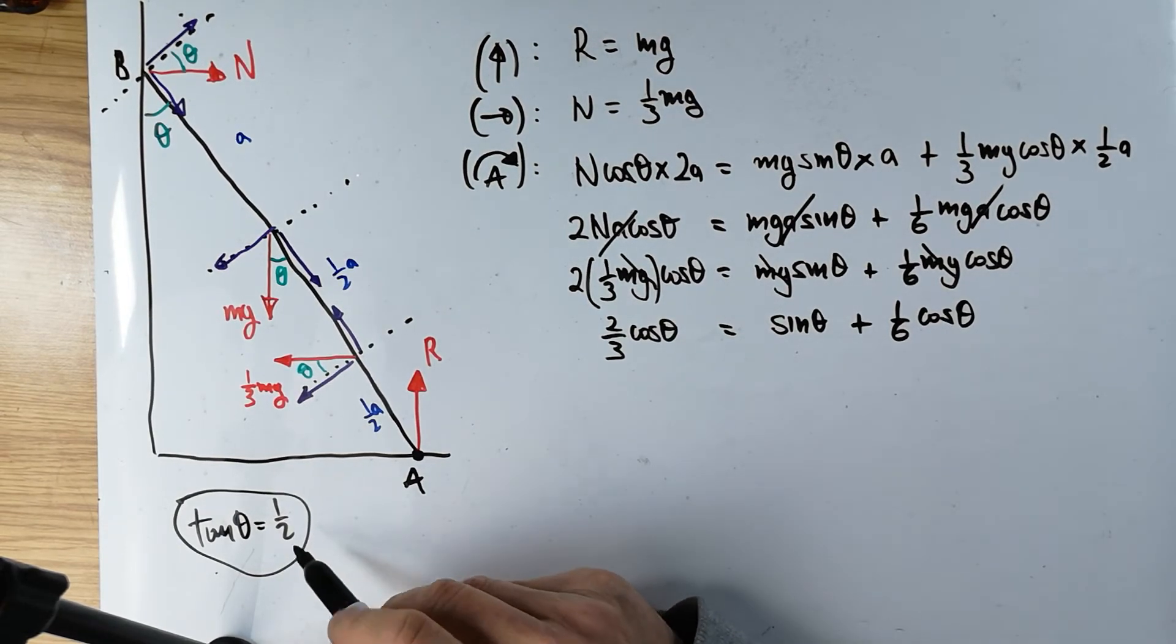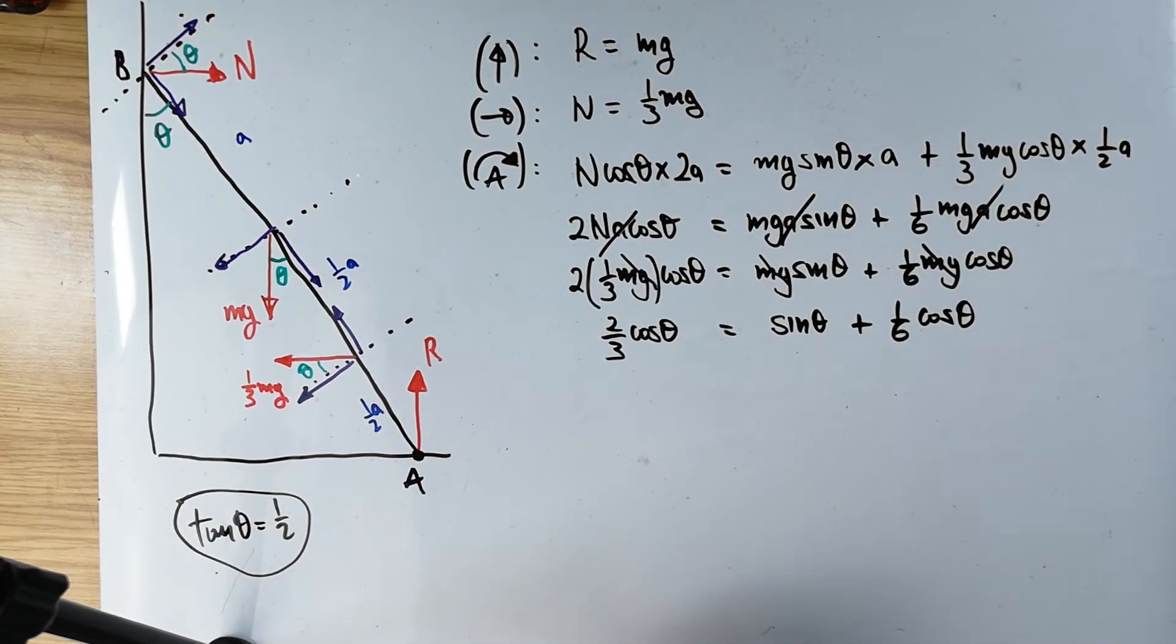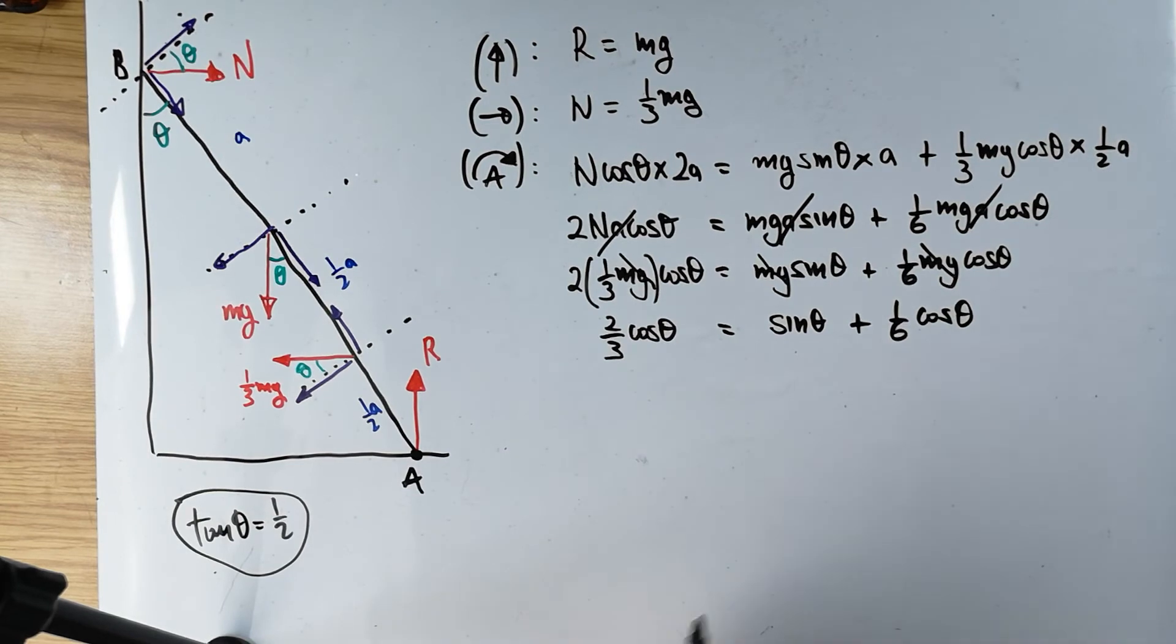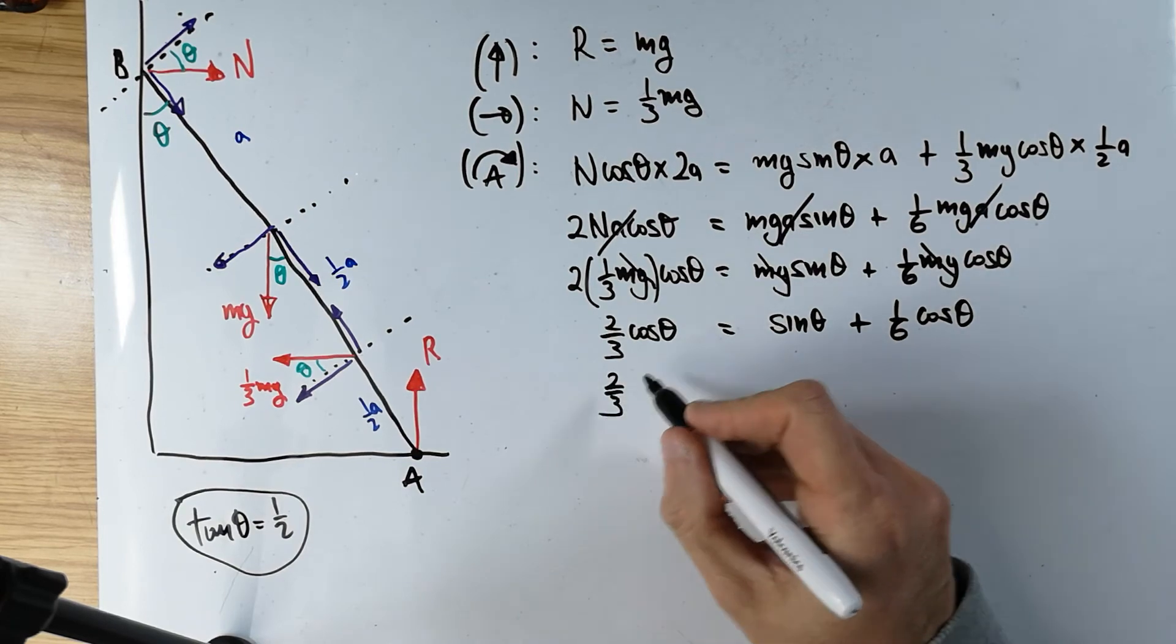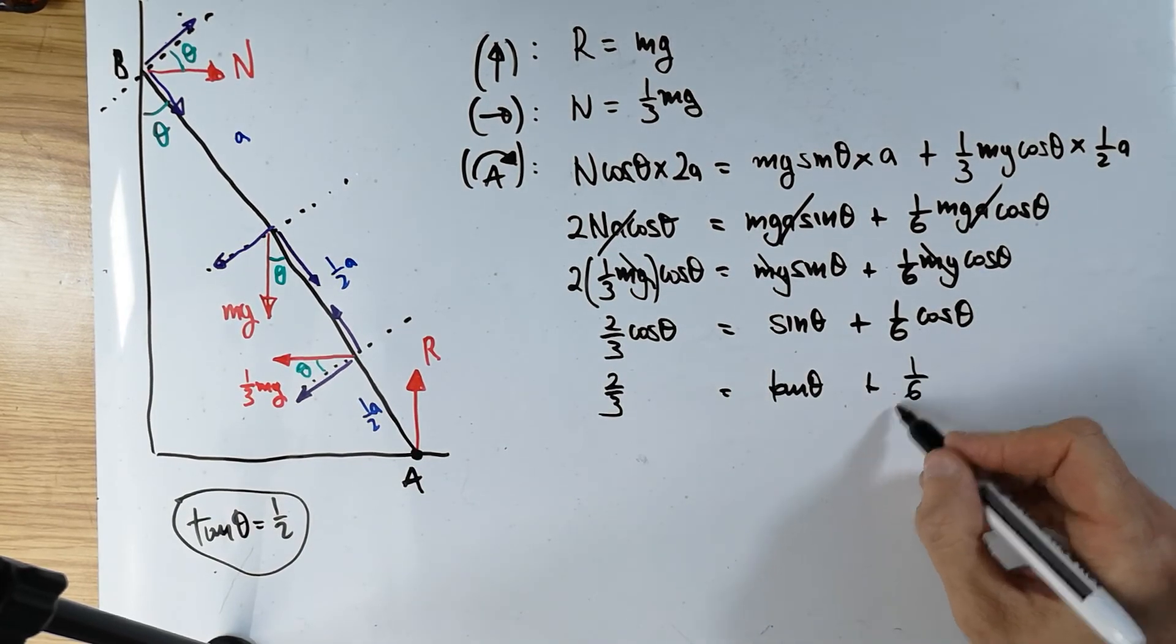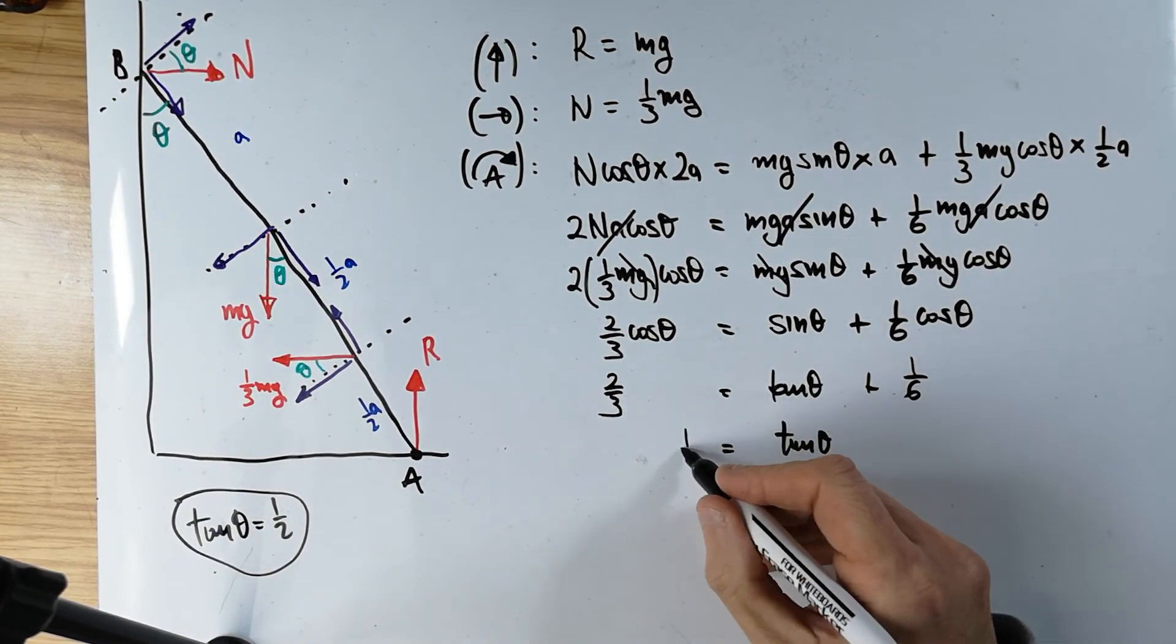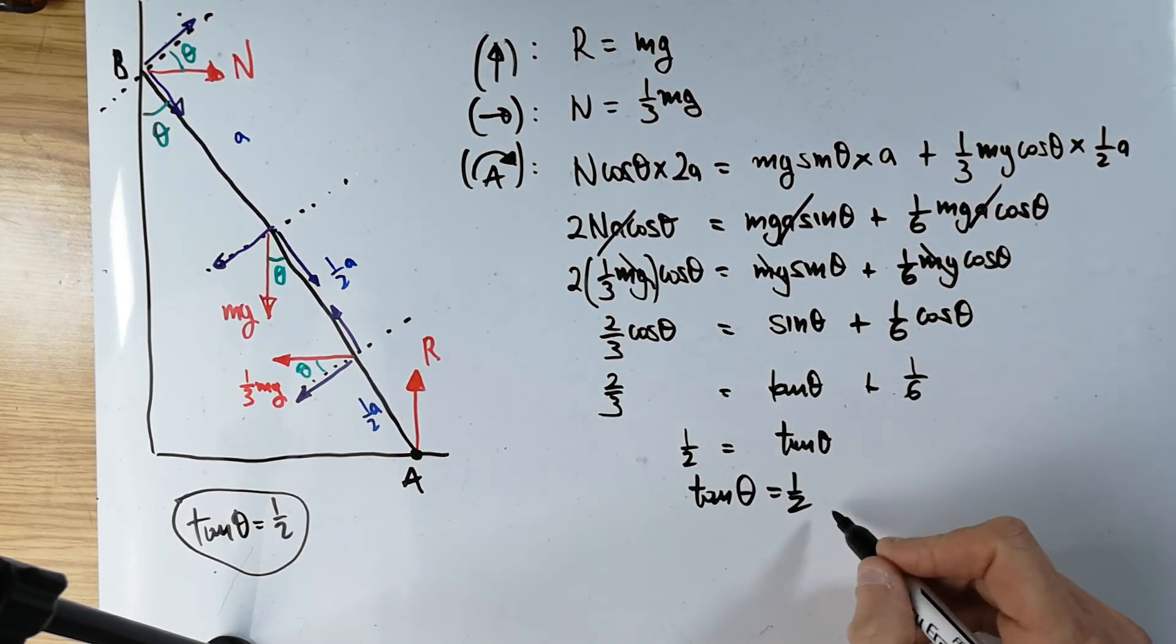But what am I trying to find? I'm actually trying to show that the tan of theta in this problem must be equal to a half. And I have lots of sines and cosines. Very simple. I'm going to divide this equation by the cos of theta. Or you can put cosines and sines on separate sides. It's up to you how you see this now. Me personally, I will divide the equation by the cos of theta. So that's going to give me two thirds, that's gone. Sine theta divided by cos theta will become a tan, plus cos theta divided by cos theta is one sixth. And then lastly, tan theta on this side, two thirds take away one sixth is a half. Or tan theta is a half, as required.